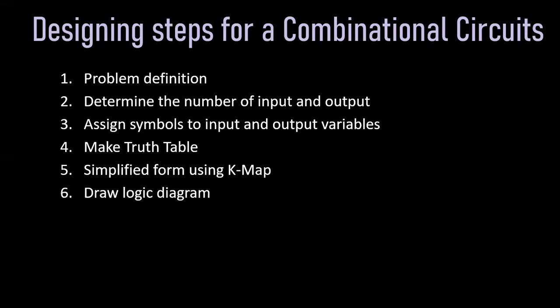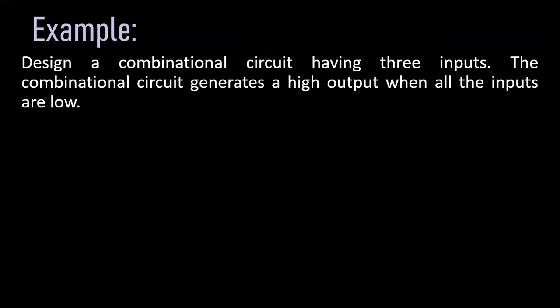Let's repeat the steps. Step number one is the problem definition. In the next step we will determine the number of inputs and outputs. Step number three is to assign letters to the input and output variables. In the next step we will make a truth table for the given inputs and outputs, then simplify it using K-map, which we have studied previously. The last step is implementation of the expression by logic gates.